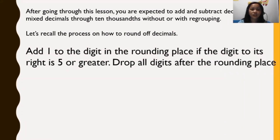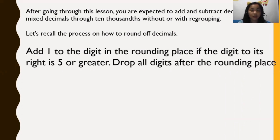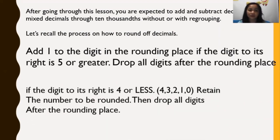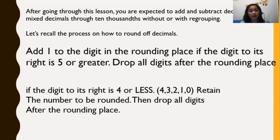Add 1 to the digit in the rounding place if the digit to its right is 5 or greater than 5. Then drop all digits after the rounding place. And if the digit to the right is 4 or less than 4, retain the number to be rounded, then drop all digits after the rounding place.